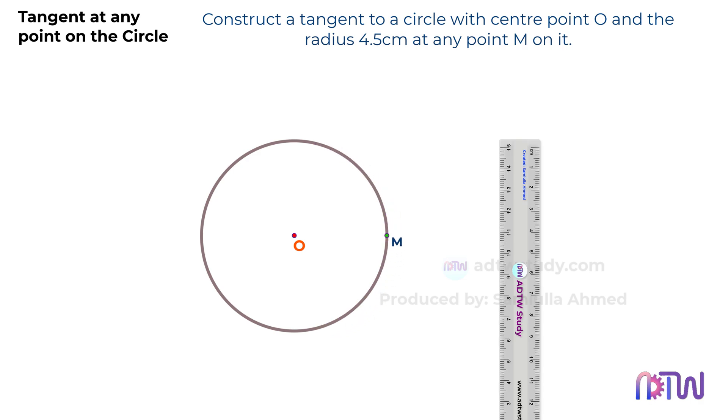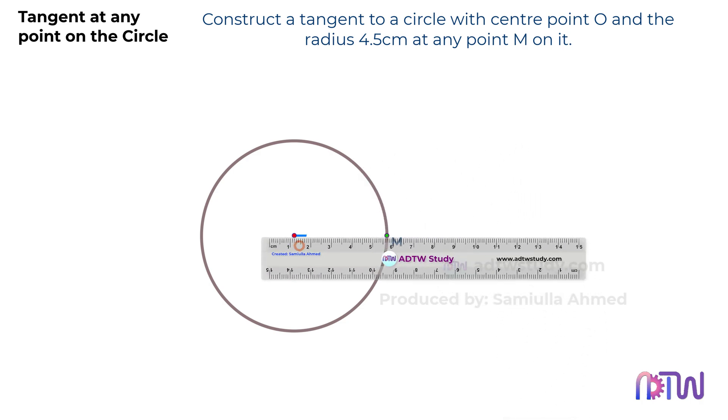Next, to draw a tangent passing through point M, we'll extend a line from the center point O of the circle so that it passes through point M.